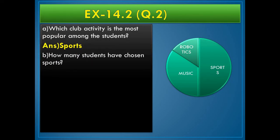How many students have chosen sports? In the question, the number of students is 600 and sports is half of the students. So it is 1 by 2 into 600 that is 300 students like sports.